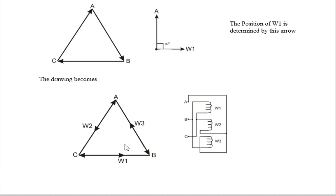So W1 is here moving away from C, W2 moving away from A, W3 moving away from B. Drawing the vector diagram: W1 polarity side is connected to B; W2 polarity side is connected to C; W3 polarity side is connected to A. The non-polarity side of W1 is connected to C; the non-polarity side of W2 is connected to A; the non-polarity side of W3 is connected to B. The vector diagram is very easy.